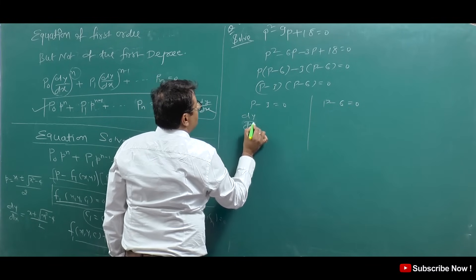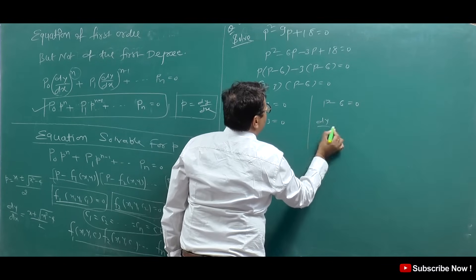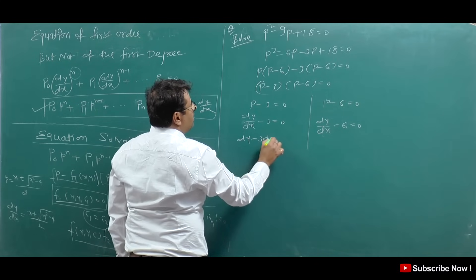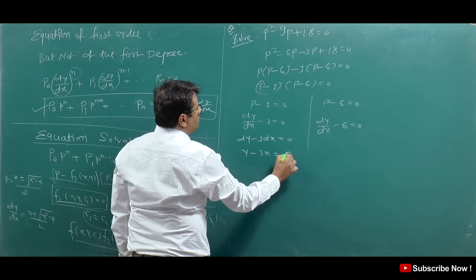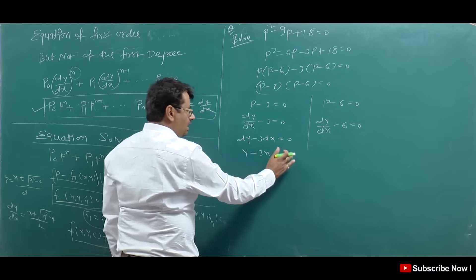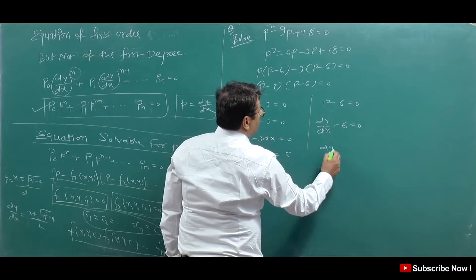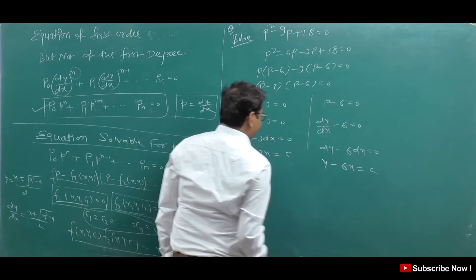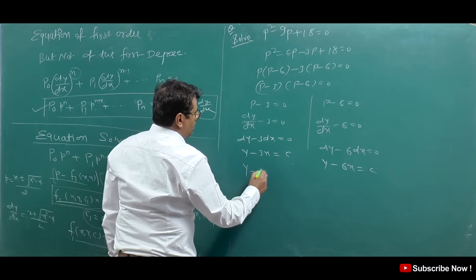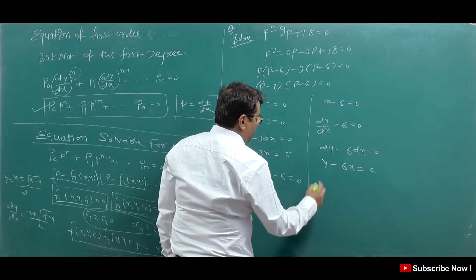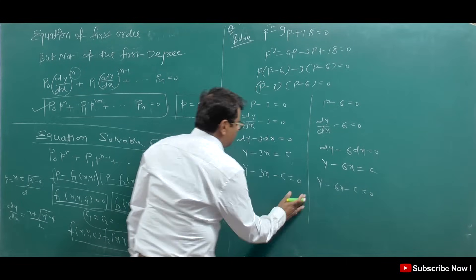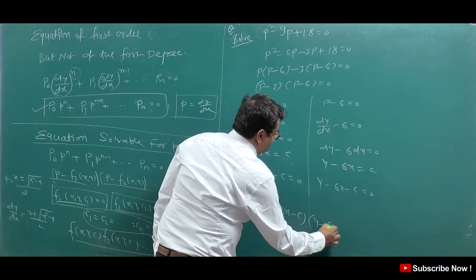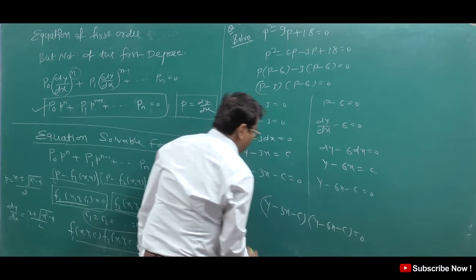From dy/dx = 3: integrating, dy - 3dx = 0, so y - 3x = C. From dy/dx = 6: dy - 6dx = 0, so y - 6x = C. The combined answer is (y - 3x - C)(y - 6x - C) = 0.